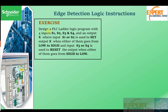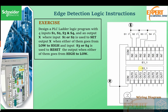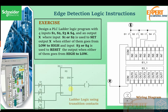Now we look at an exercise: design a PLC ladder logic program with four inputs S1, S2, S3, and S4, and an output X. Input S1 or S2 is used to set the output X when either goes from low to high, and input S3 and S4 is used to reset the output when either goes from high to low. The hardware circuit has switches S1, S2, S3, S4 — all normally open — and output X.